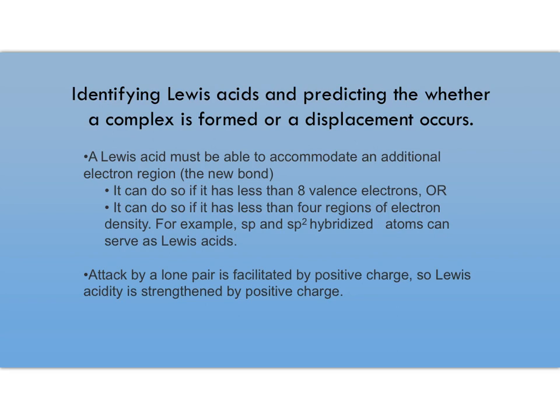Alright, so summarizing: how do you identify a Lewis acid and how do you predict whether it's going to just make one new bond or it's going to make and break a bond? Let's first talk about identifying Lewis acids. The bottom line: a Lewis acid must be able to accommodate a new electron pair to make a new bond. The types of substances that can do that are those with less than eight valence electrons. Boron is a really good example of that; beryllium is another good example.